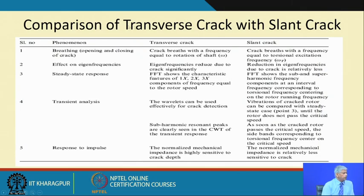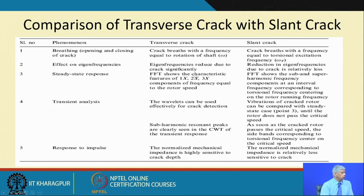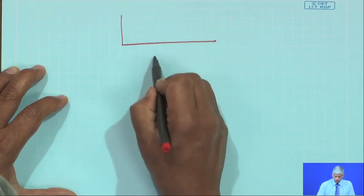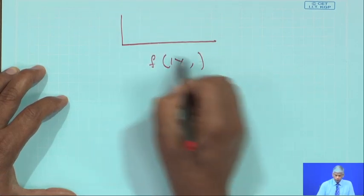A key comparison is between transverse crack and slant crack. A transverse crack beats with a frequency equal to the rotation speed, while a slant crack beats with a frequency equal to the torsional excitation ωt. The eigenvalue is reduced significantly due to a transverse crack, but the reduction in eigenvalues due to a slant crack is relatively less. For steady state response, transverse cracks show 1x, 2x, 3x components of rotor speed frequency, whereas slant cracks show sub- and super-harmonic frequencies — fractional frequencies in the spectrum.